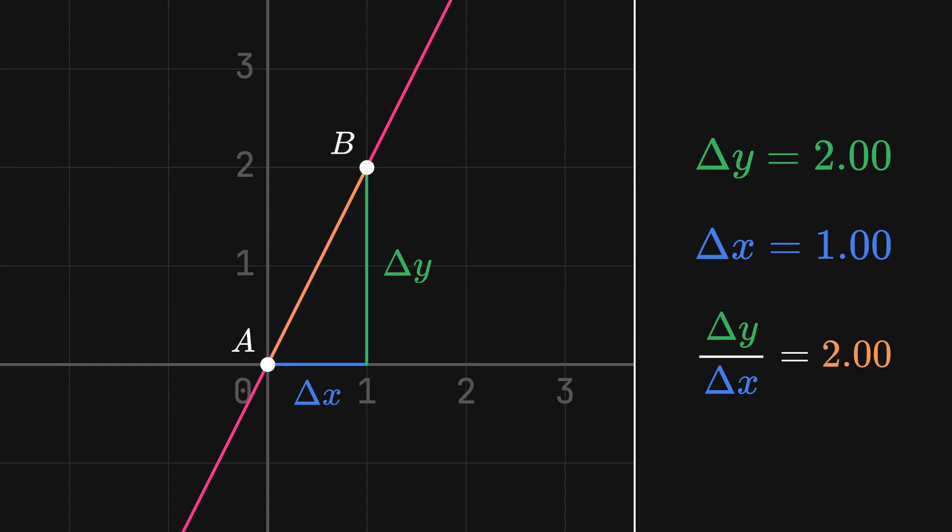Currently, the value of delta y is 2 and the value of delta x is 1. Delta y divided by delta x is 2, which means that for every increase in x, we increase by twice as much in y.